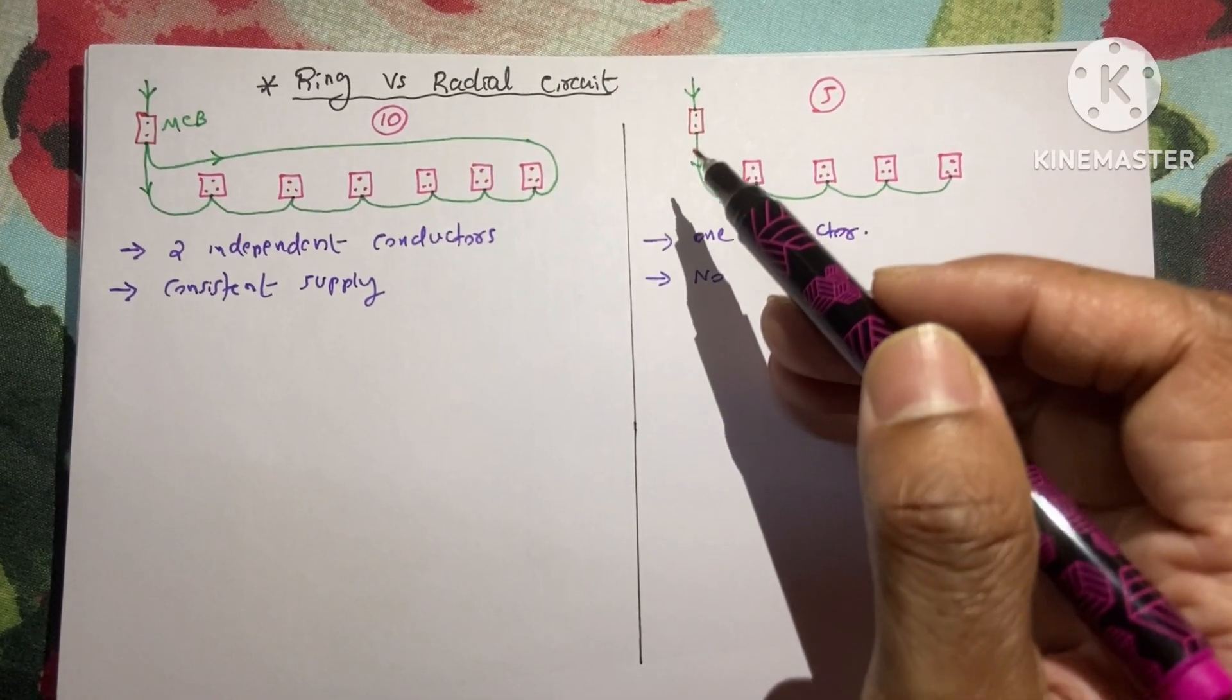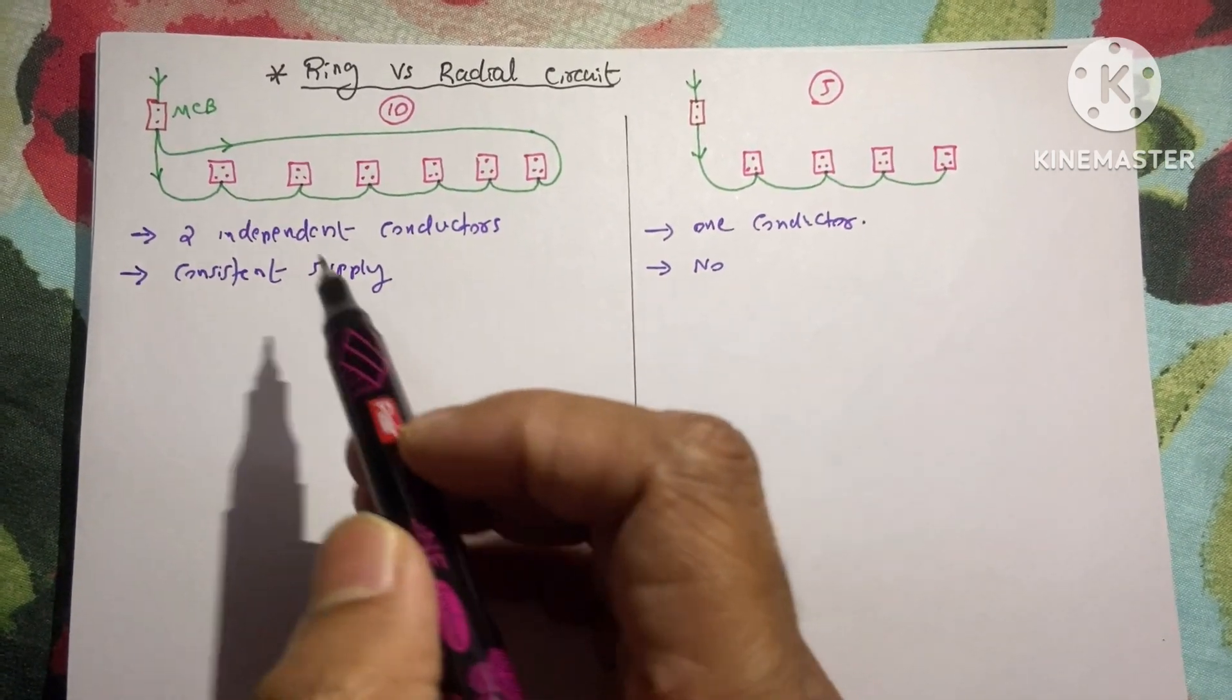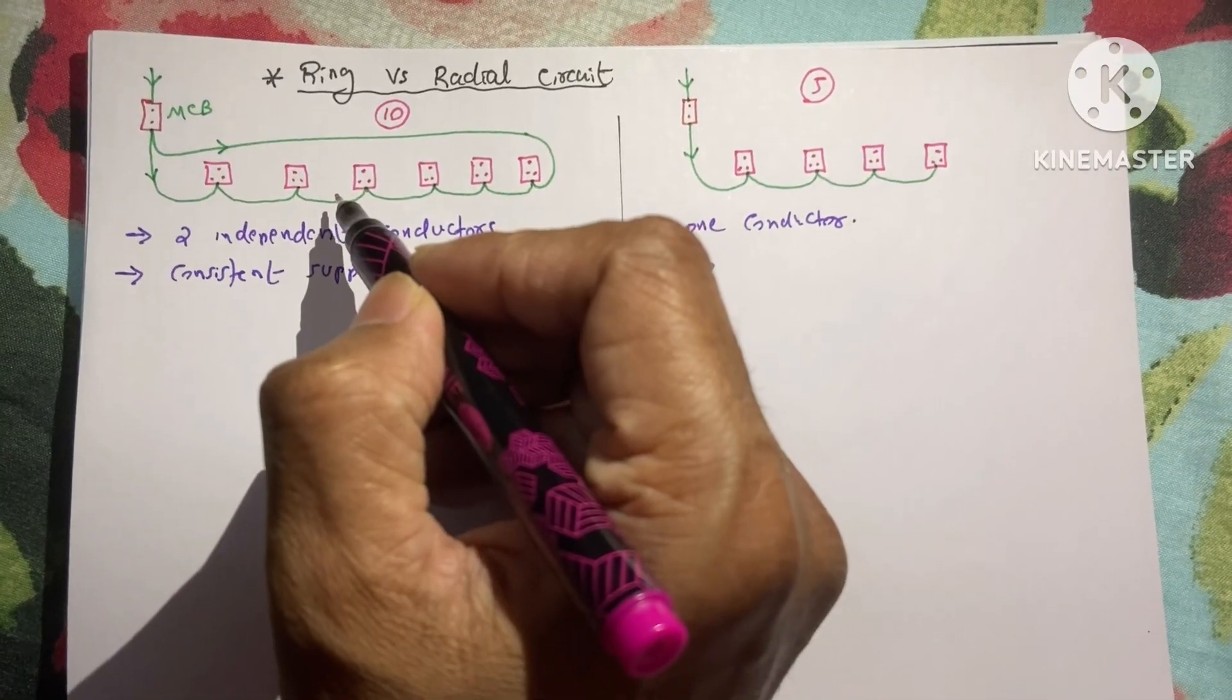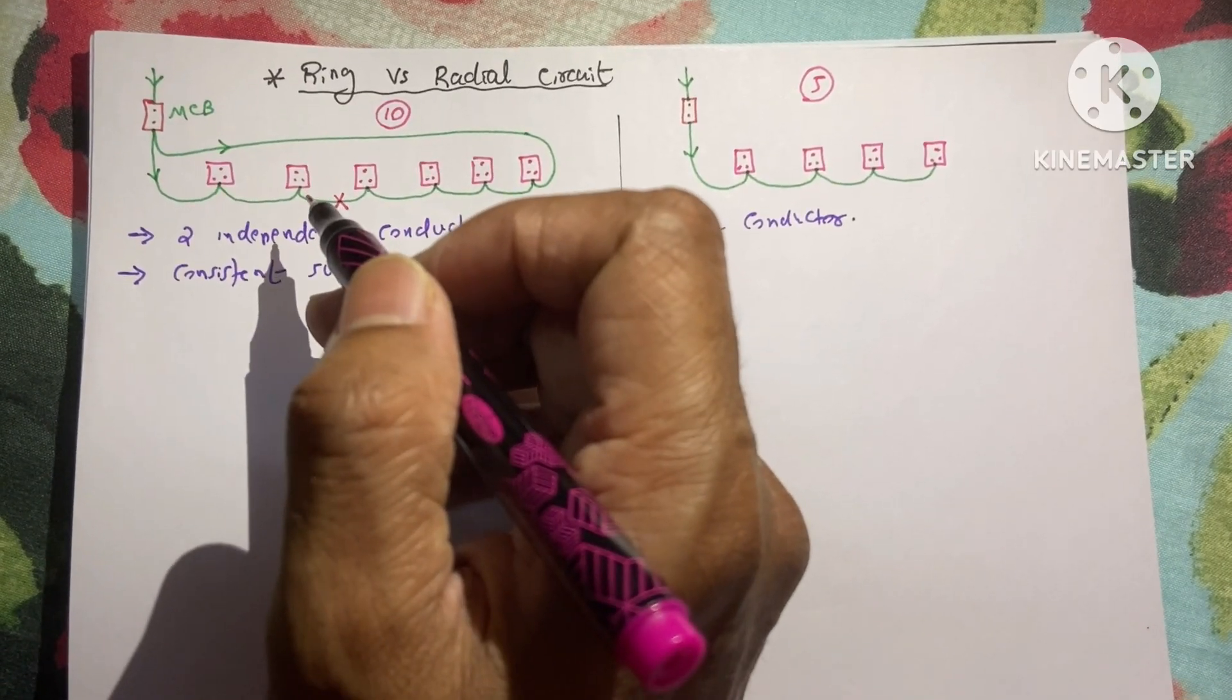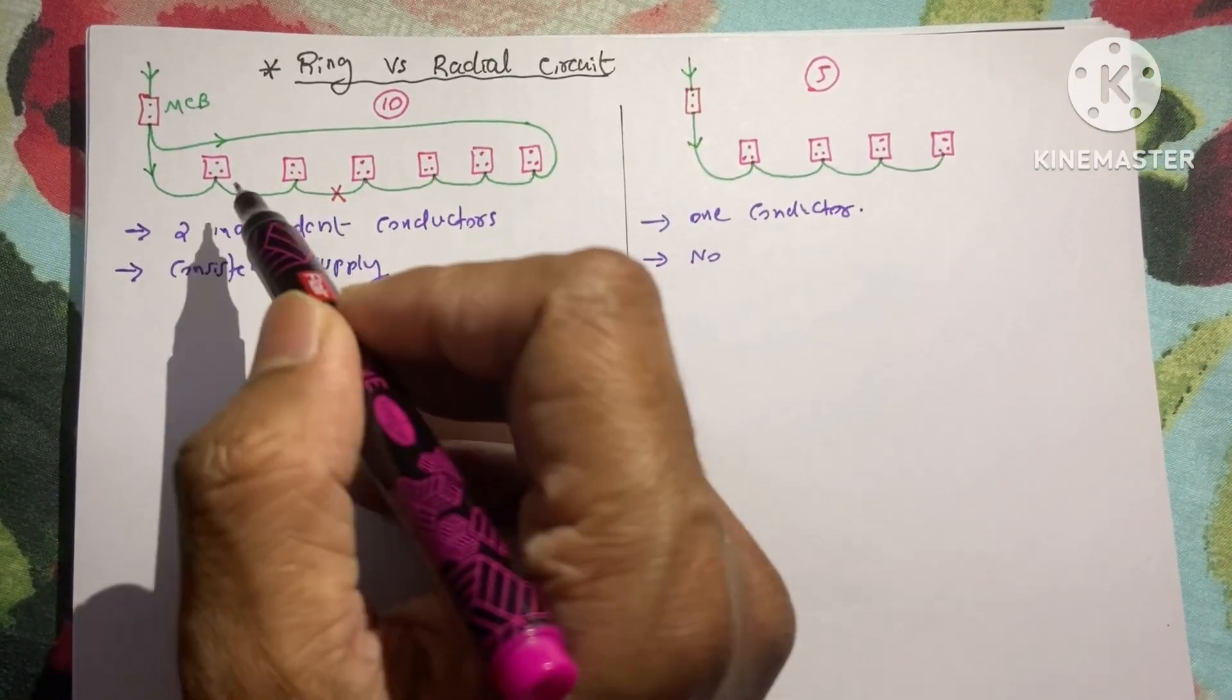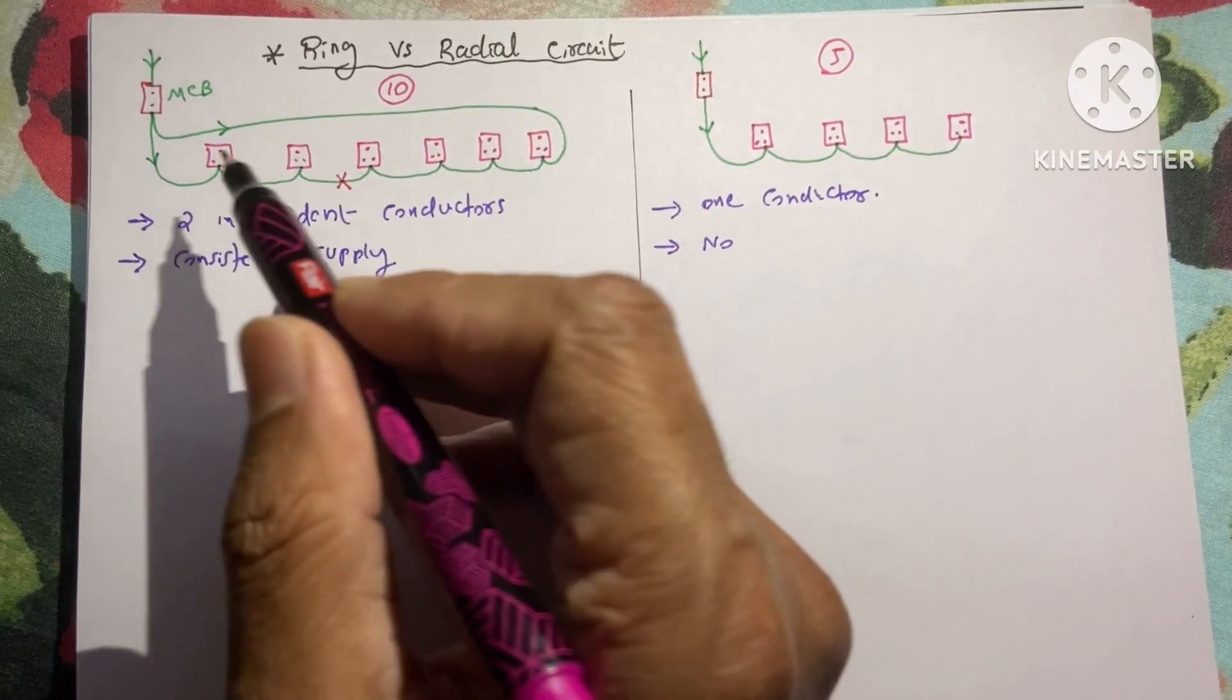You can see only one conductor comes from the MCB to the sockets. In the ring circuit each socket would get consistent electrical supply. If this circuit is cut here, even though the sockets on both sides of this cut would get consistent power supply. These two sockets got the power supply through here and these sockets got the power supply through this way.